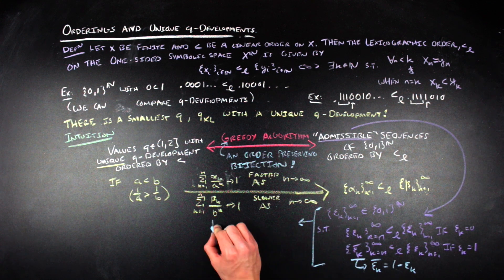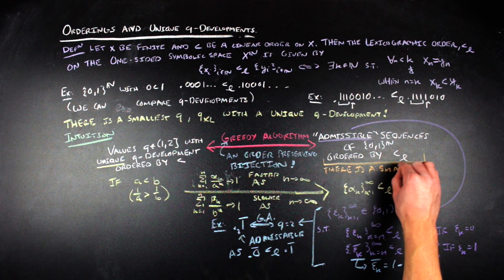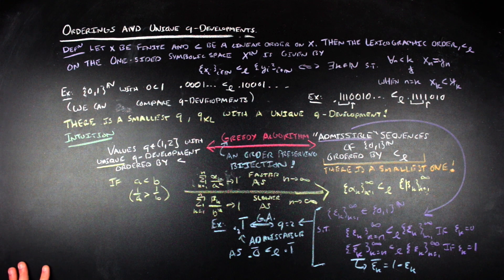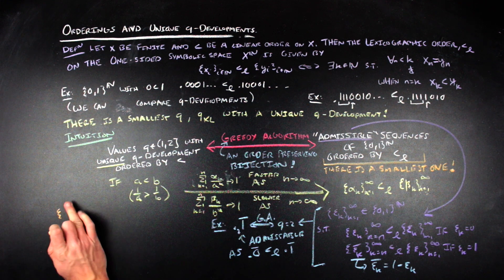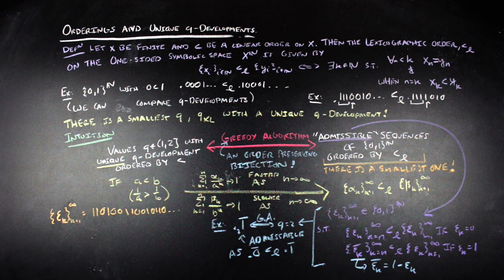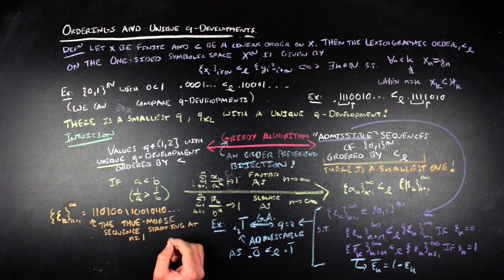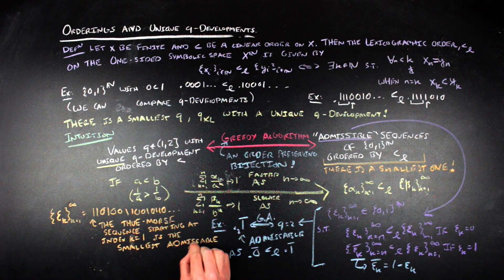For example, the sequence of all 1s is admissible, and the greedy algorithm maps 2 to the sequence of all 1s. The constant at the heart of this video comes from the fact that Komornik and Loretti were able to show there is a smallest admissible sequence, and because the greedy algorithm produces an order-preserving bijection between these two sets, there is a smallest q with a unique q-development. Now this q is called the Komornik-Loretti constant. The smallest sequence they found turned out to be the Prouhet-Thue-Morse sequence, which I've written a few terms out on the board here — there's a ton of really cool things about it and I've linked some information in the description.